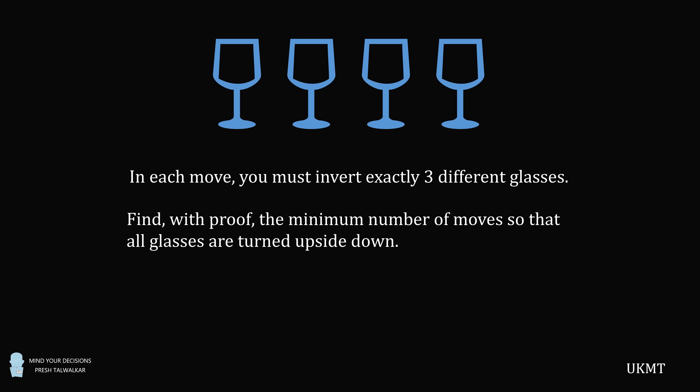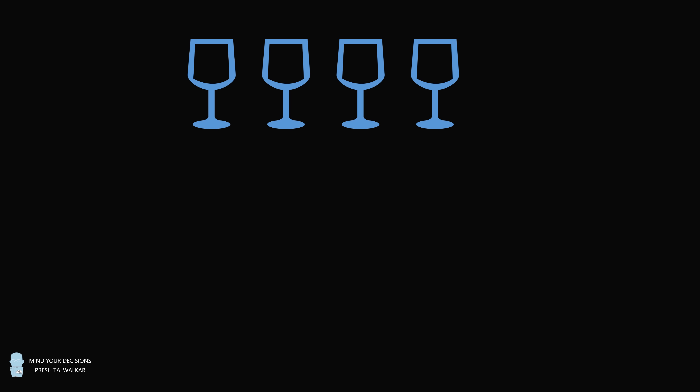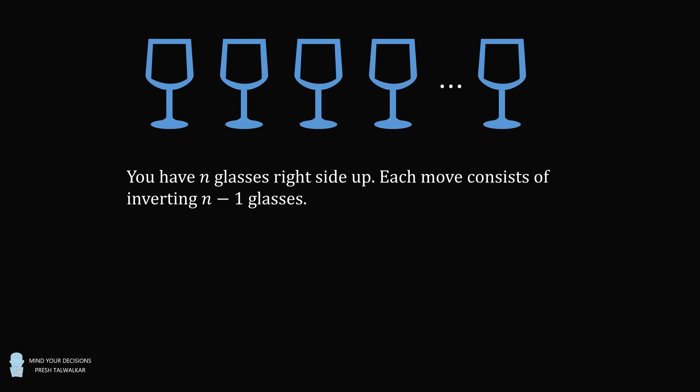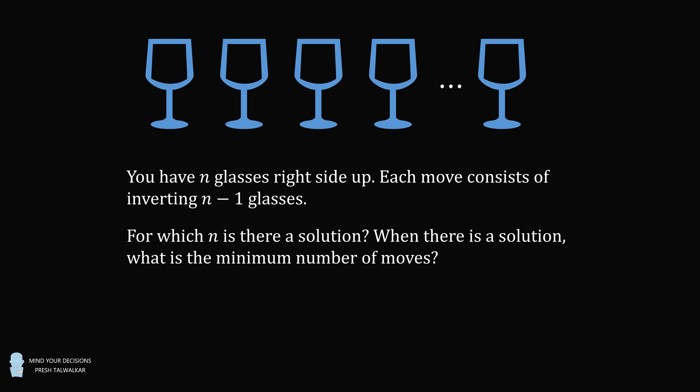I saw this in a tweet by UKMT. That's the first part of the question. Now let's consider the general case with n glasses. You have n glasses right side up, and each move consists of inverting n-1 glasses. For which n is there a solution? When there is a solution, what is the minimum number of moves? I saw this generalization on Puzzling Stack Exchange with a wonderful solution by Caleb Stanford. Pause the video if you'd like to give this a try, and when you're ready, keep watching to learn how to solve this problem.